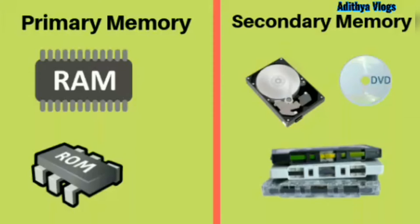The accessing speed of RAM is faster. ROM is a non-volatile memory — the memory is permanent and will not be erased once the power is turned off. It allows the user to only read the information; the user cannot make any changes to the information. The access speed is slower in comparison with RAM.